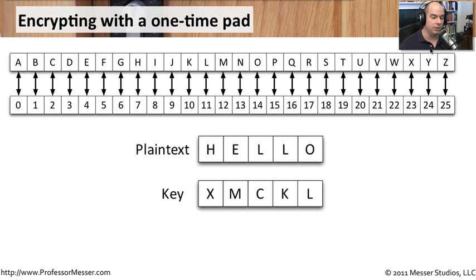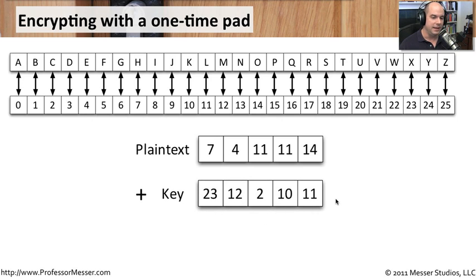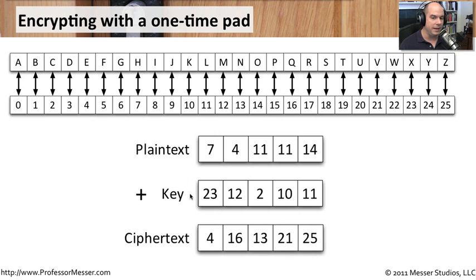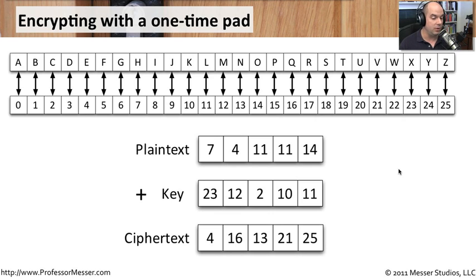Using our conversion chart, we convert 'hello' to the numbers 7, 4, 11, 11, 14, and the key XMCKL to 23, 12, 2, 10, 11. Now we add the corresponding numbers together. If the sum goes past 25, we wrap back around to 0 and continue counting — so 7 plus 23 gives us 30, which wraps to 4. Adding all the columns gives us 4, 16, 13, 21, and 25.